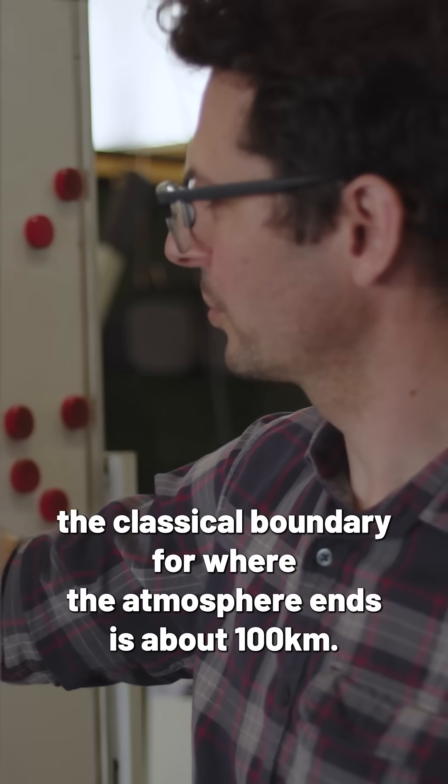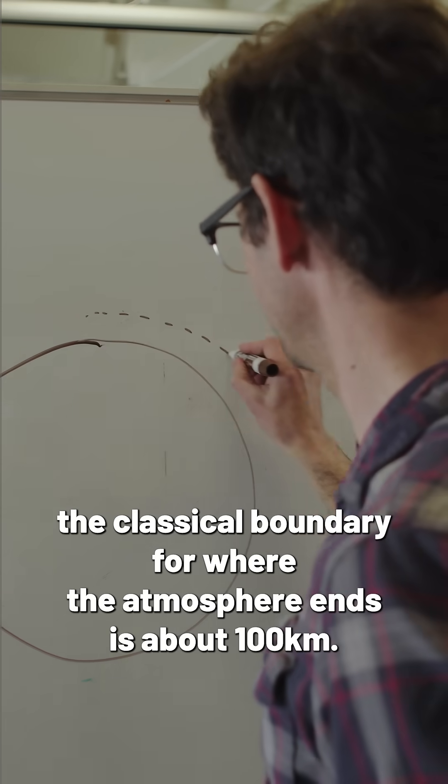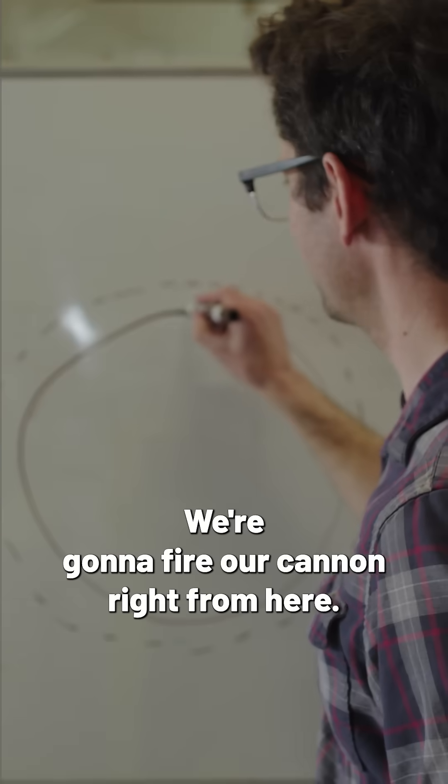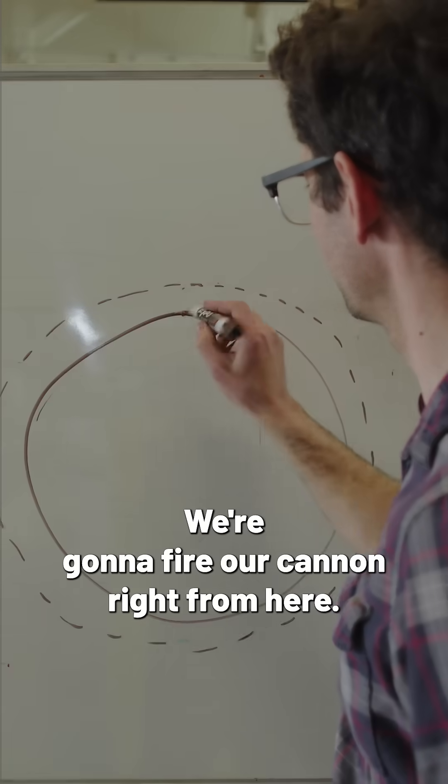The classical boundary for where the atmosphere ends is about 100 kilometers. This is not to scale at all. We're gonna fire our cannon right from here.